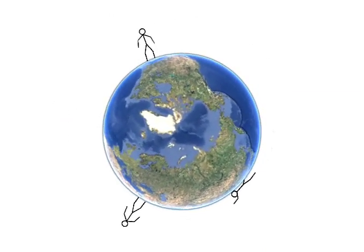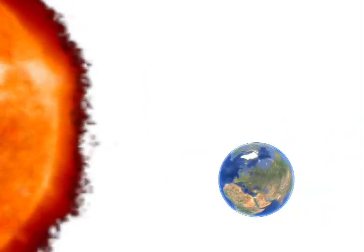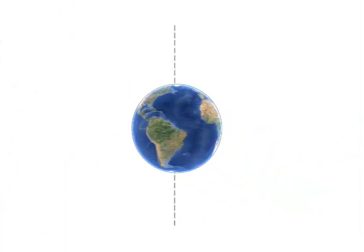It makes a full rotation about every 24 hours, which is why we have night and day. The axis of rotation of the Earth goes from the north to the south pole. Like this.